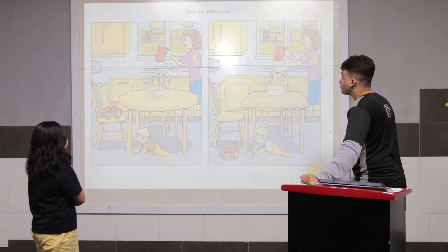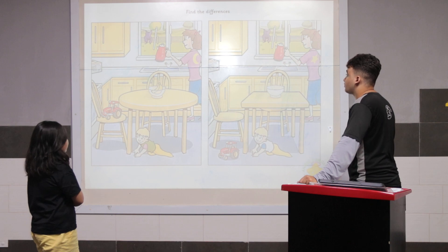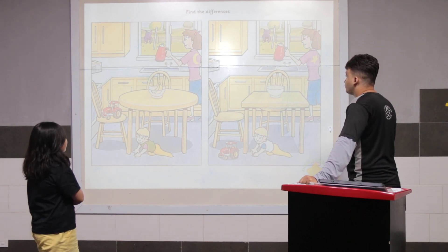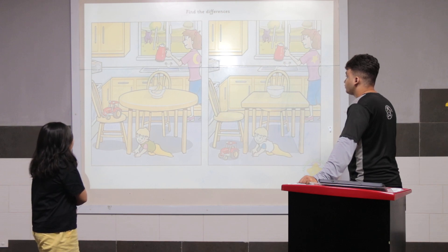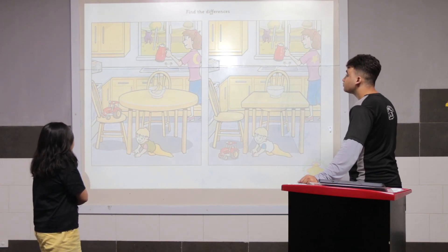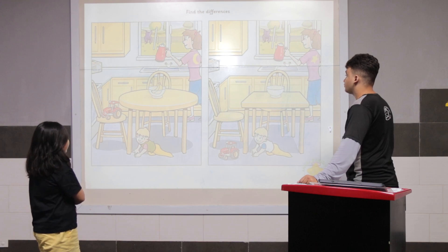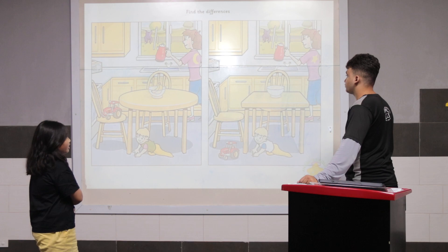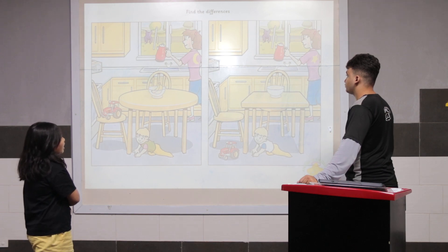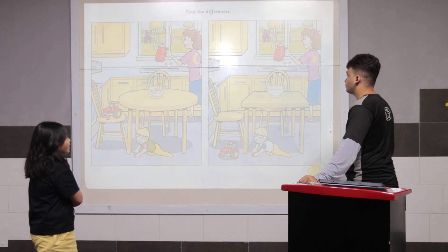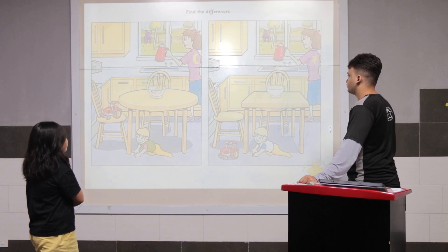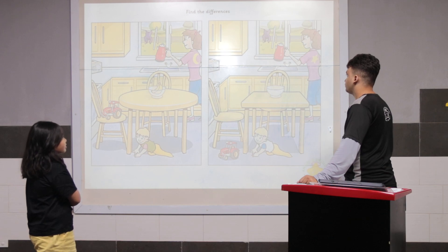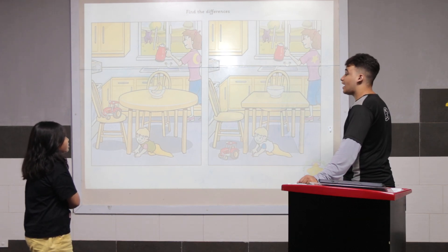In picture one, the tractor is on the chair. In picture two, the tractor is under the chair. In picture one, the boat had bananas. In picture two, the boat not had bananas. In picture one, the moon is on her t-shirt. In picture two, the star is on her t-shirt. Very good.